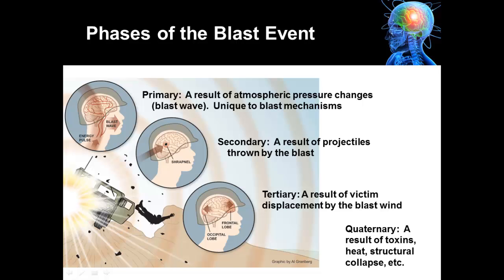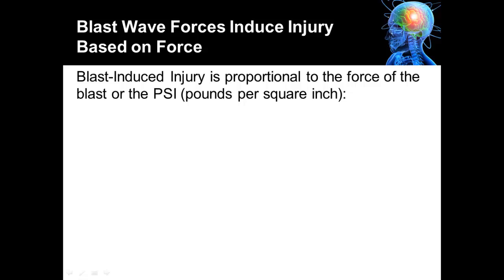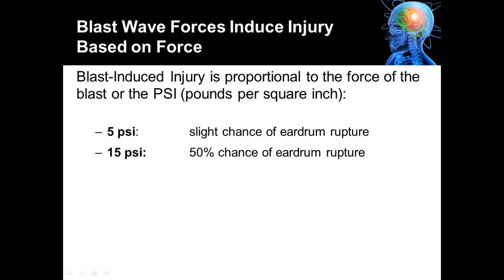The blast wave forces induce injury based on the force that's generated, usually defined in pounds per square inch (PSI). The greater the force, the greater the damage to the body. For example, a force of five PSI can result in a slight chance of eardrum rupture, whereas fifteen PSI results in a fifty percent chance of eardrum rupture. At thirty to forty PSI there's a slight chance of lung damage.